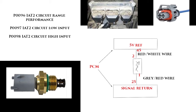This is for a 6.0L Power Stroke, I think 2006. But these can pertain to other vehicles. I don't believe these are manufacturer-specific codes, though I could be wrong. If you have another diesel or gas engine, another brand, and it is setting a code like this, the wiring most likely will be very similar. I can't guarantee it will be exact, but it will probably be similar.